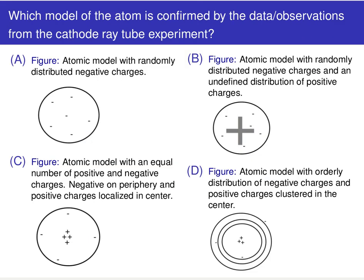I'm going to give you four choices. Choice A is a basic atomic model with some negatively charged particles on the inside — just my little atom with these negatively charged particles floating around randomly inside.